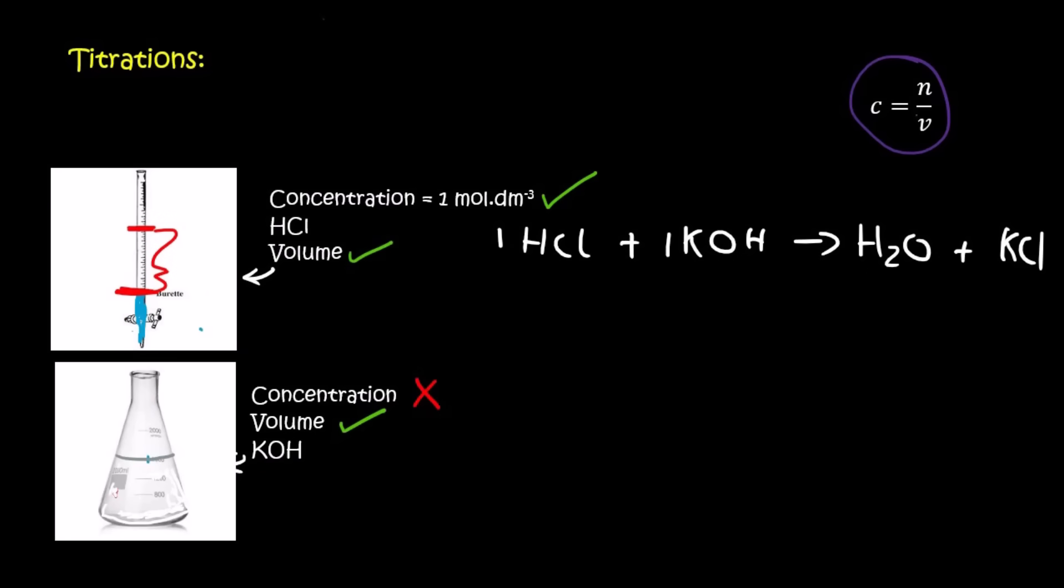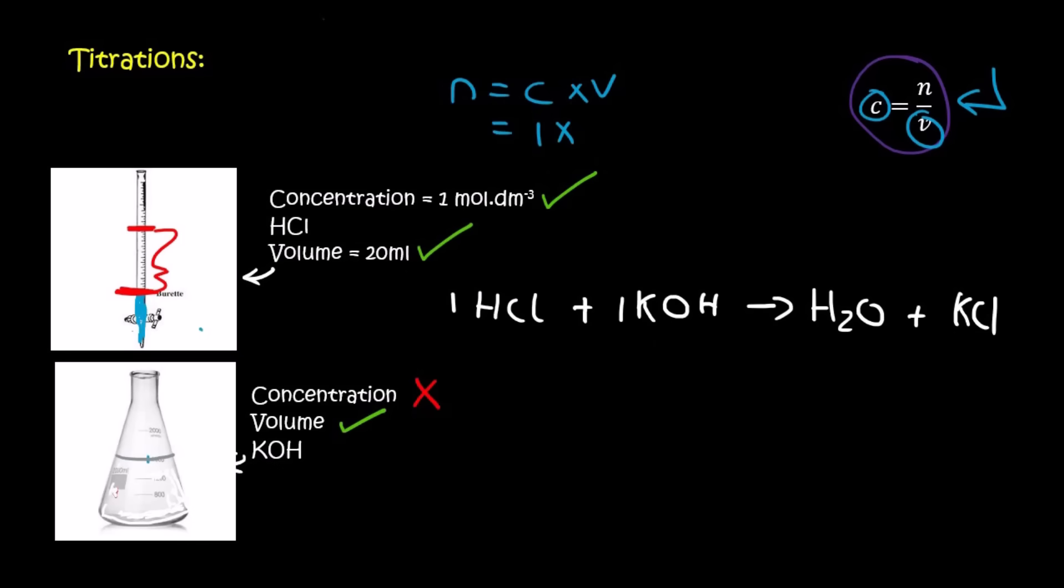Now here's where it gets very interesting. So now for the top solution, for the acid, we now know its volume and we know its concentration. So if we look at this equation here, if we have the concentration and the volume then we can get the number of moles that we used. We can rearrange that equation to get n = c × v. The concentration is 1 and the volume that we used, let's pretend that was 20 milliliters. But remember 20 milliliters is the same as 0.02 decimeters and that's what you've got to use in the concentration calculation. And so if you do this we get 0.02 moles of HCl.